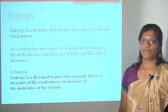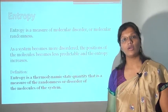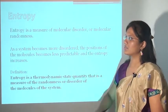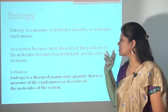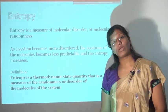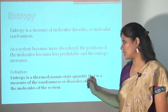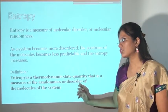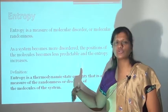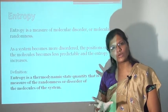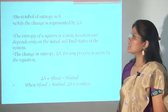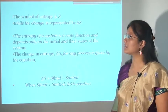The second term is entropy. Entropy is a measure of molecular disorder or molecular randomness. As the system becomes more disordered, the positions of the molecules become less predictable and the entropy increases. Entropy is a thermodynamic state quantity that measures the randomness or disorder of the molecules of the system. As the phases change, the randomness or disorderness of molecules also changes — that is measured by entropy. The symbol of entropy is capital S, while the change in entropy is represented by delta S.